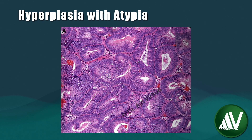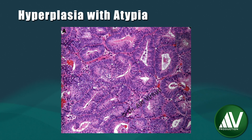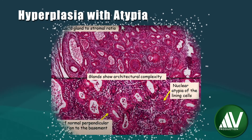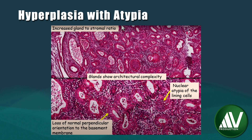This is another actual pathology slide showing hyperplasia with atypia. The glands show architectural complexity with nuclear atypia of the lining cells. Individual cells are rounded and lose the normal perpendicular orientation to the basement membrane. In addition, the nuclei have open vesicular chromatin and conspicuous nucleoli. This is another slide highlighting these features.